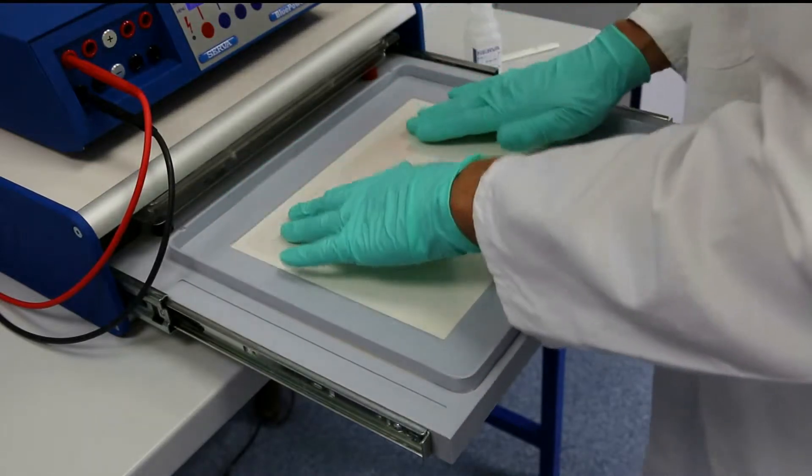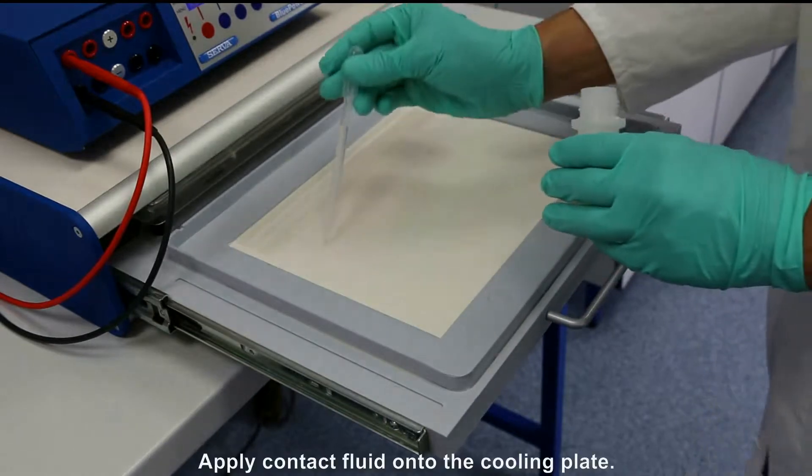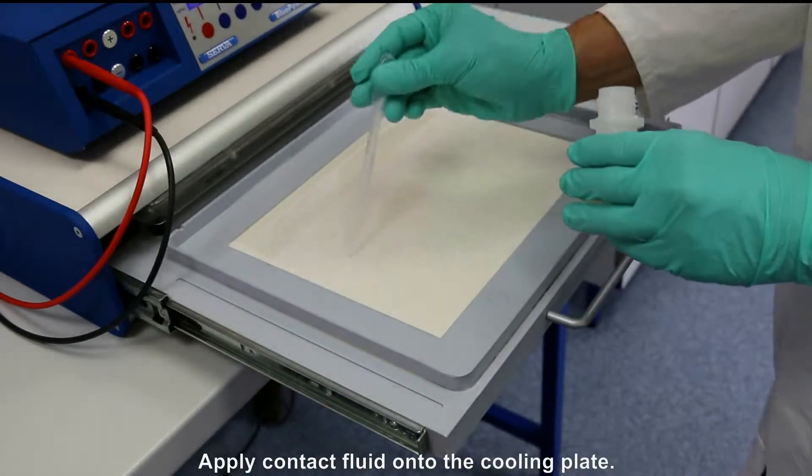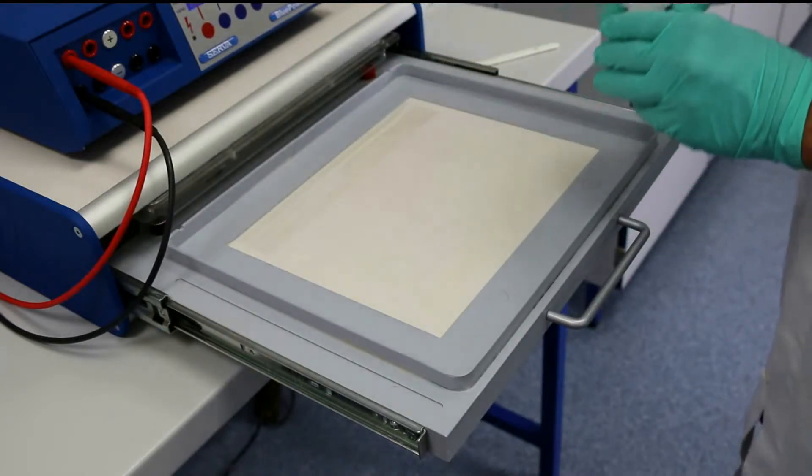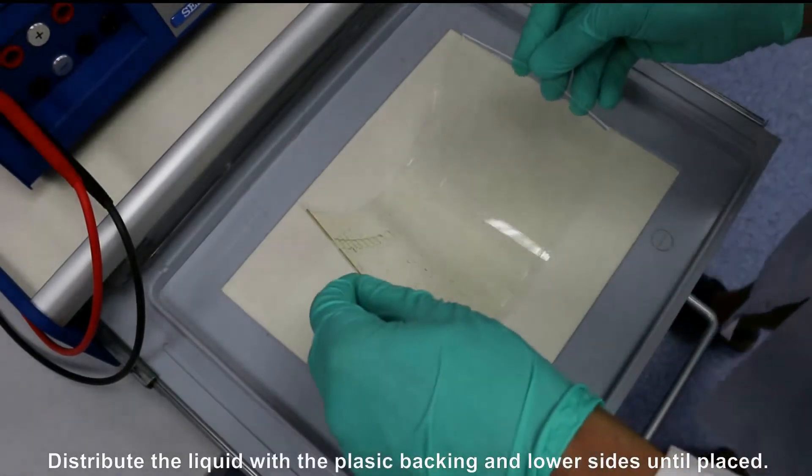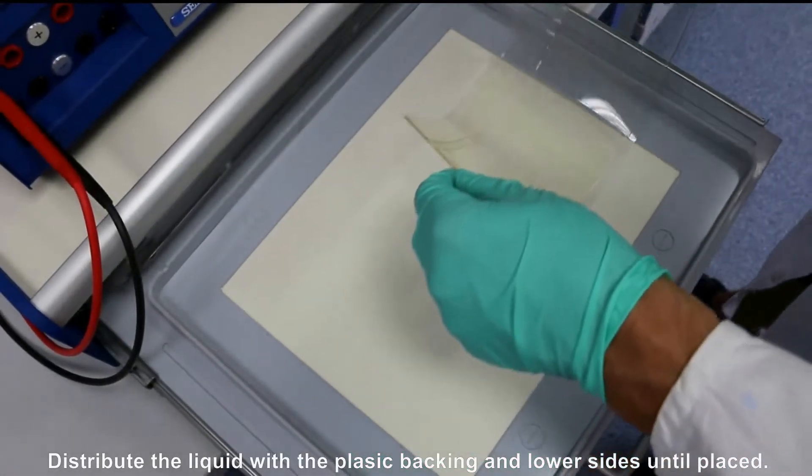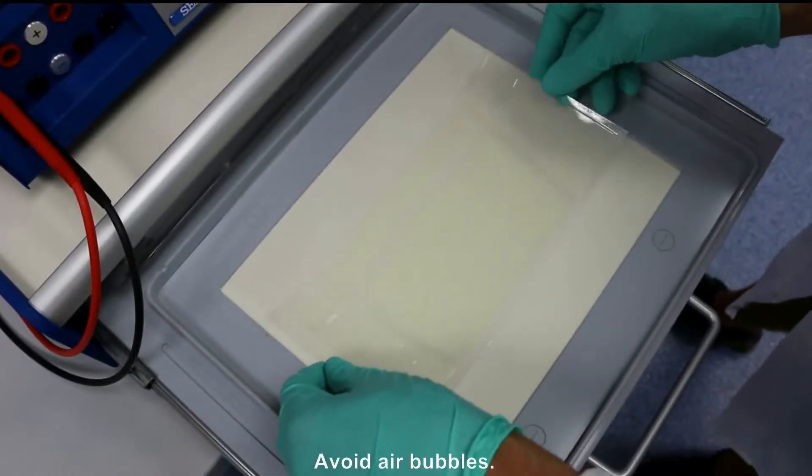First, apply the contact fluid onto the cooling plate. Dispense it in an H-shape. Unpack the gel, remove the covering film and distribute the liquid with the plastic backing. Lower the sides until the gel is placed.